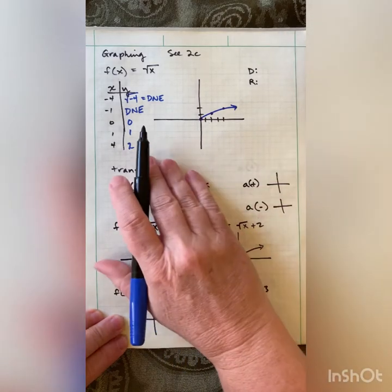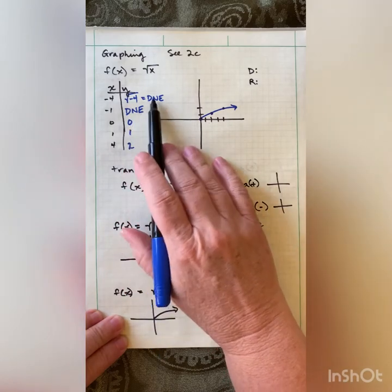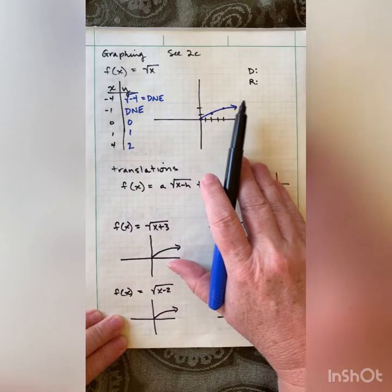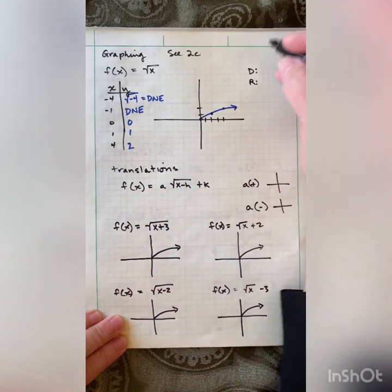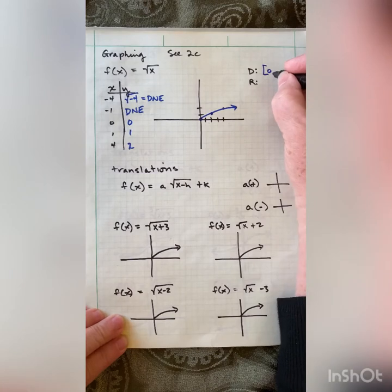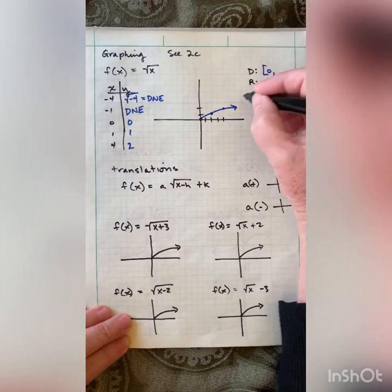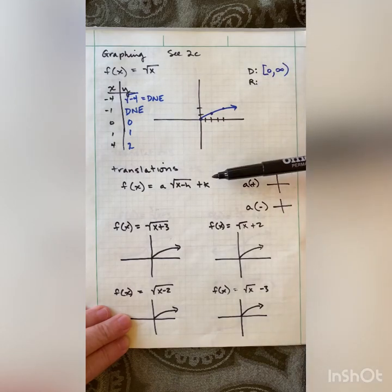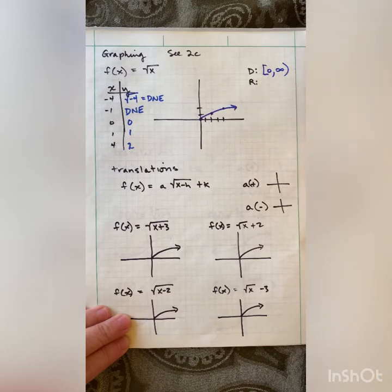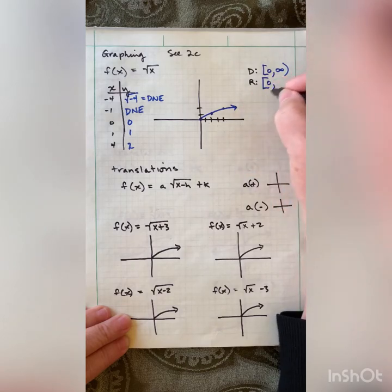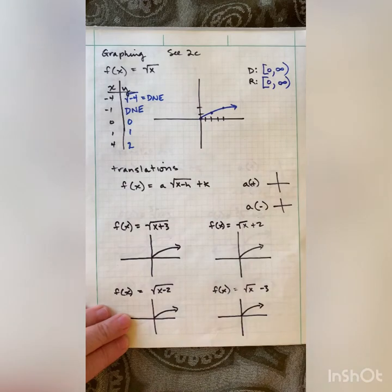Let's take a look at the domain and range. My domain is my x values — scanning left to right, it doesn't start until 0, which is included, and goes off to infinity. For the range, it doesn't start until 0, that's included, and keeps going to infinity.